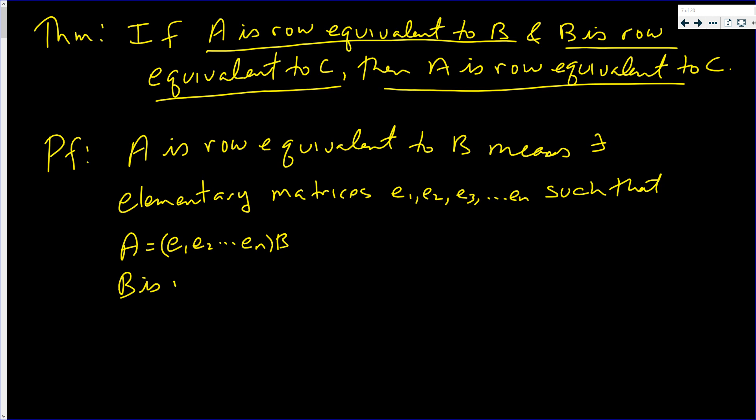B is row equivalent to C means there exist elementary row matrices, let's call them R1, R2 up to Rm such that B is equal to R1, R2 up to Rm times C.